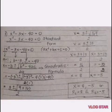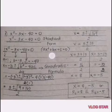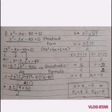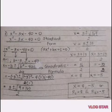In solving quadratic equations by using the quadratic formula, the given should always be written in standard form: ax squared plus bx plus c equals 0. The given here is x squared minus 3x minus 40 equals 0, so it is already written in standard form. Now get the values of a, b, and c.